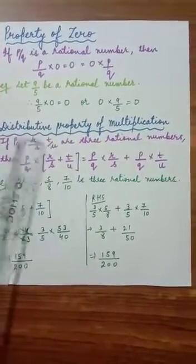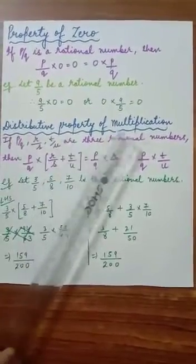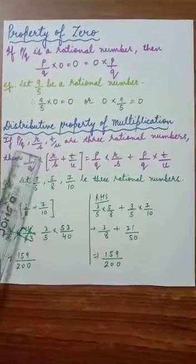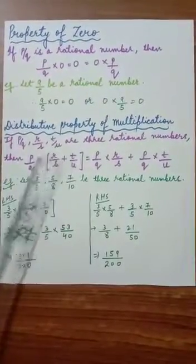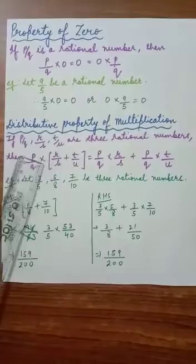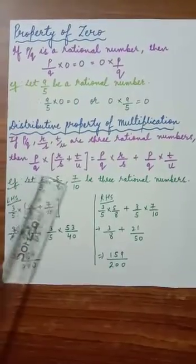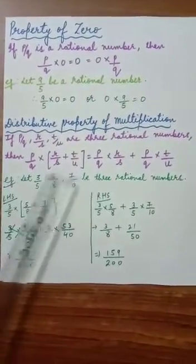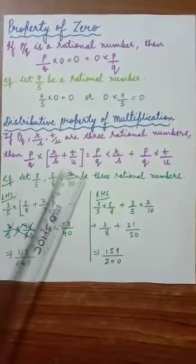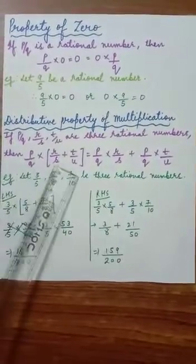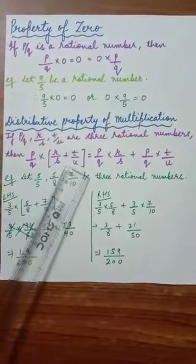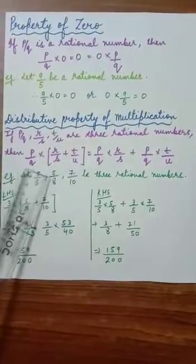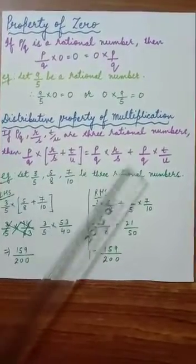Now comes the distributive property of multiplication. If p by q, r by s, and t by u are three rational numbers, then the rule is: p by q into (r by s plus t by u). If we open it up, we get p by q into r by s, plus p by q into t by u, because there is an addition sign in between.